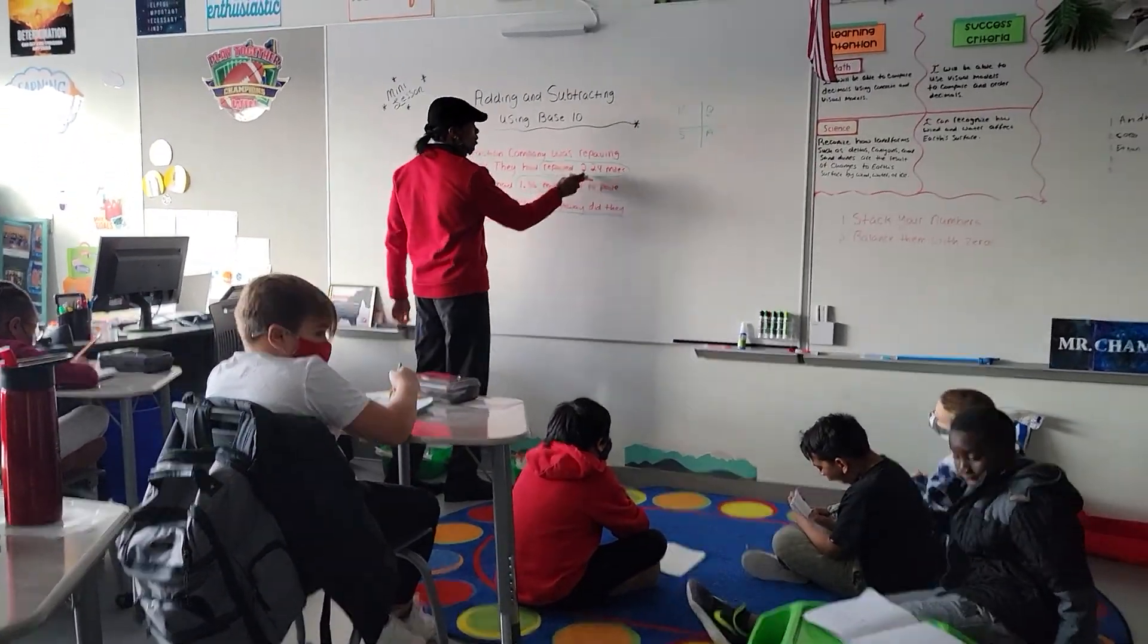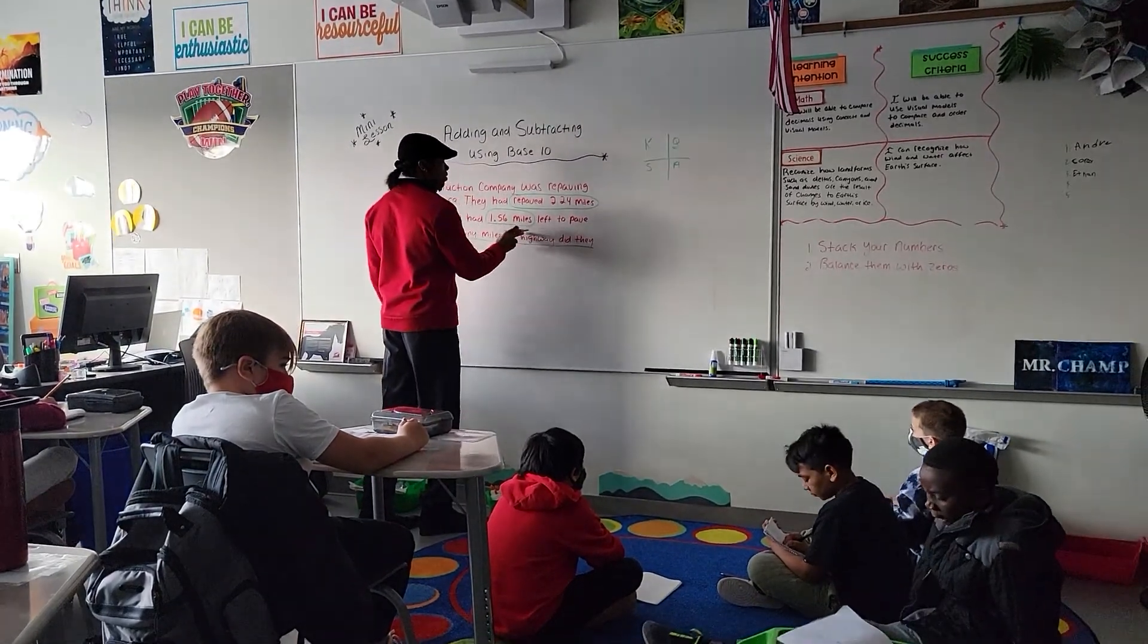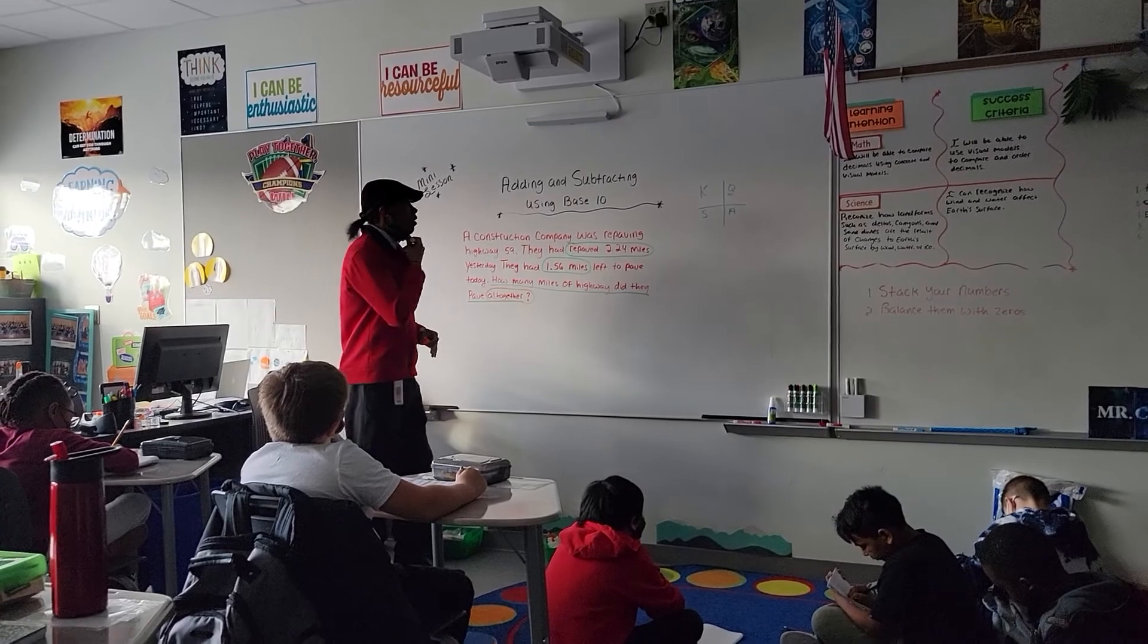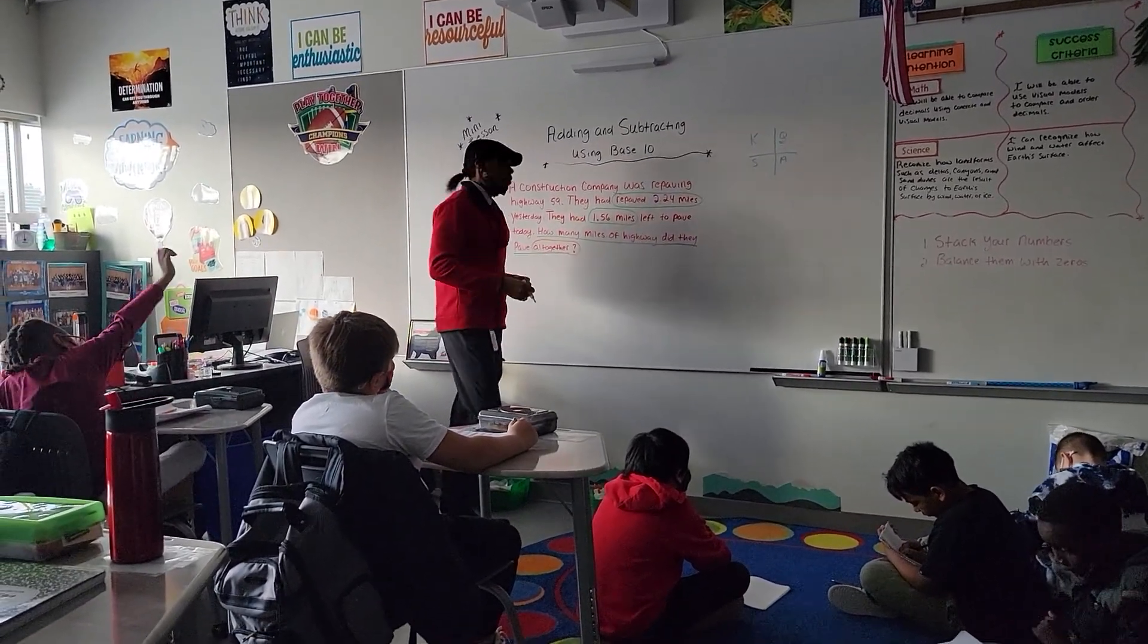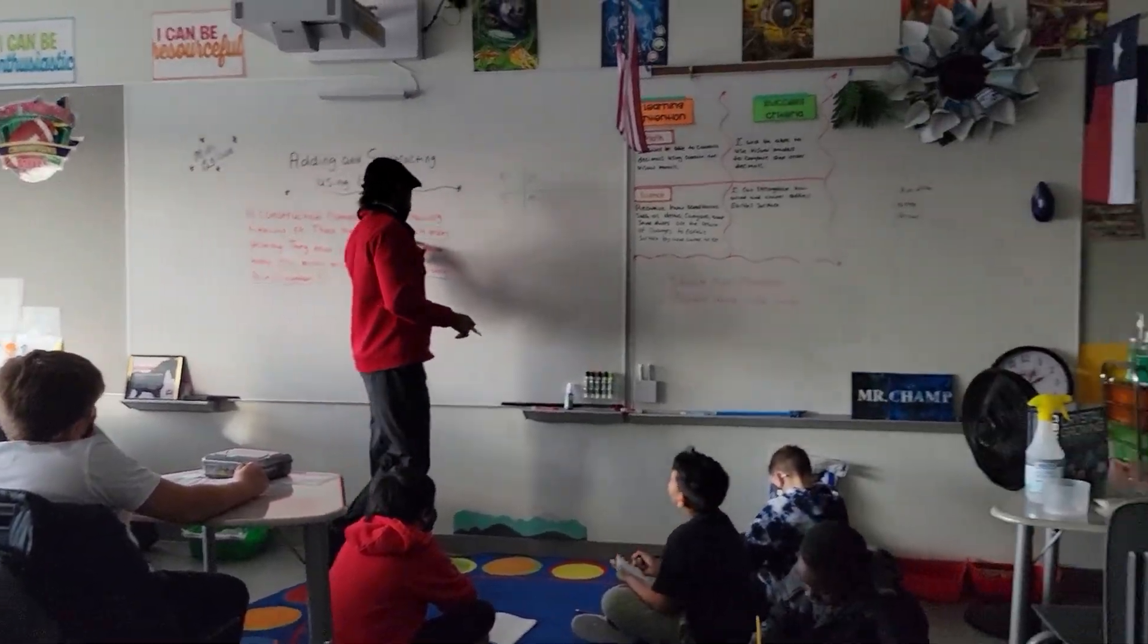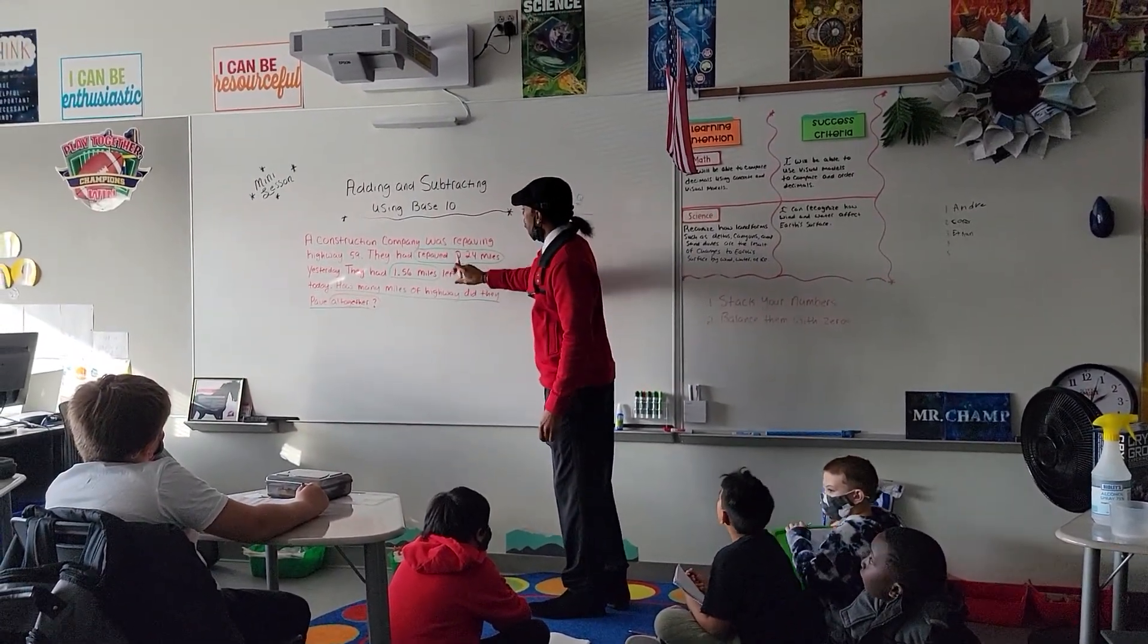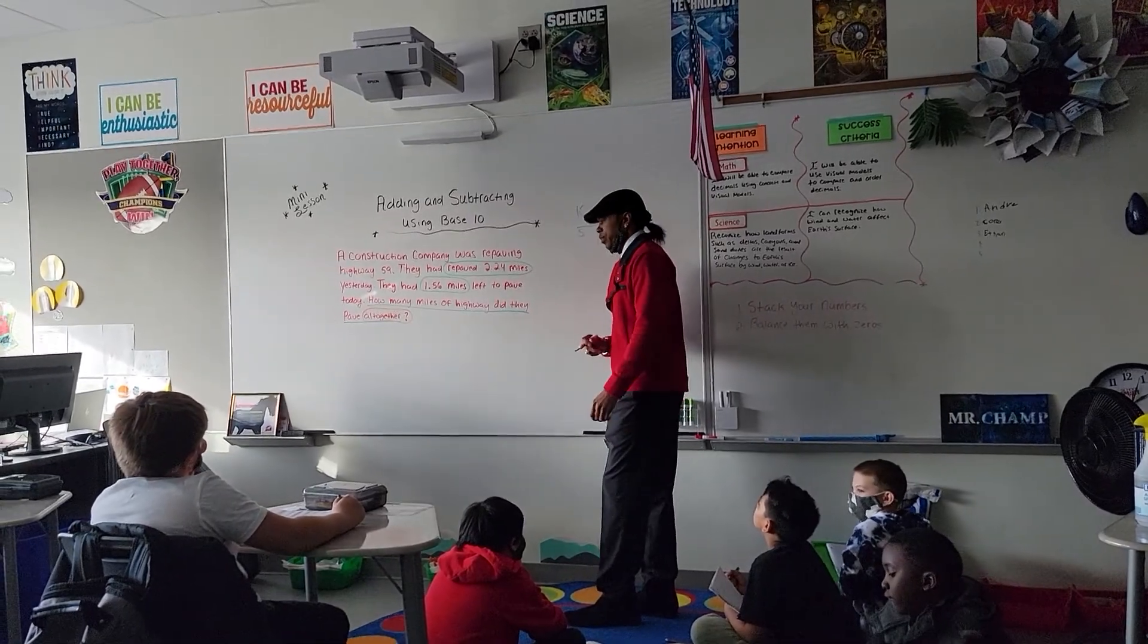All right. So we know we're going to add 2.24 miles and 1.56 miles. Now, we are dealing with decimals, right? Okay. There's many ways you can look at this. If I was to look at this, utilizing our base 10 blocks, how many flats would a 2 represent?